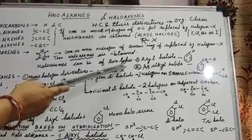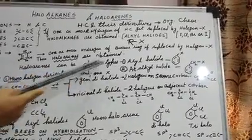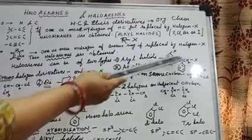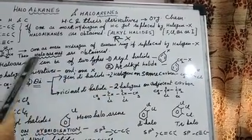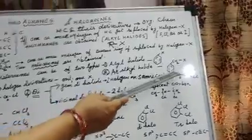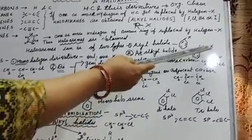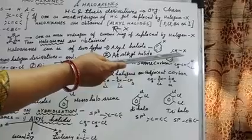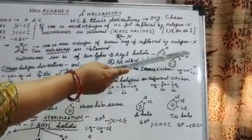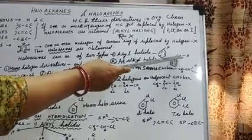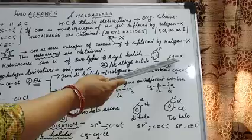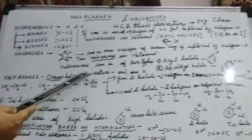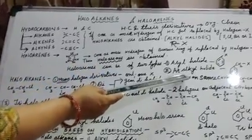Haloarenes can be of two types. First, Aryl Halide, where Halogen is directly attached to the Benzene nucleus. Second, Aralkyl Halide, where an Aryl group (phenyl ring) is present along with an Alkyl group such as CH2, and one Hydrogen of that Alkyl group is replaced by Halogen. So Aralkyl Halide contains Halogen, an Alkyl group, and an Aryl group.